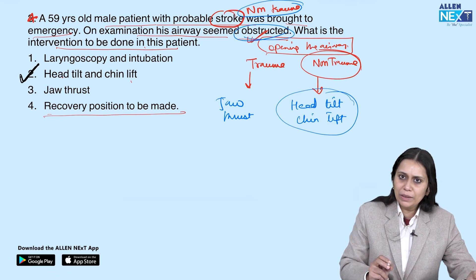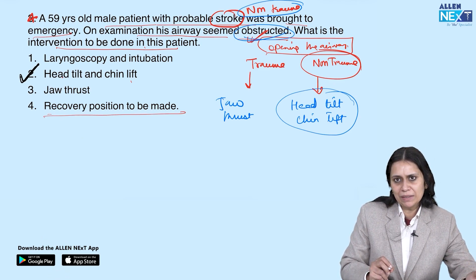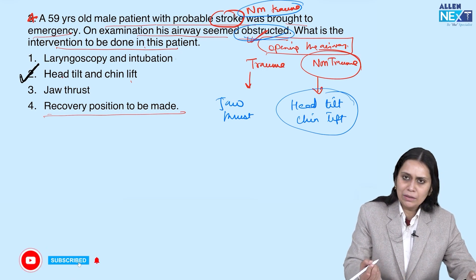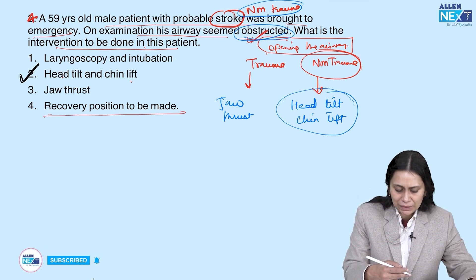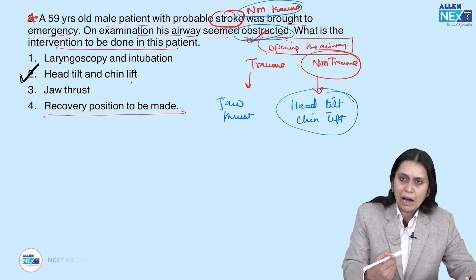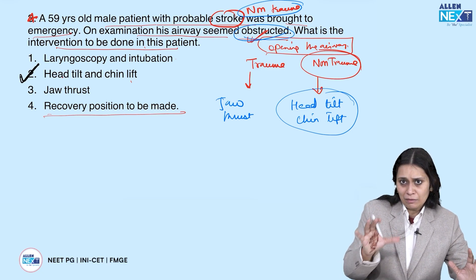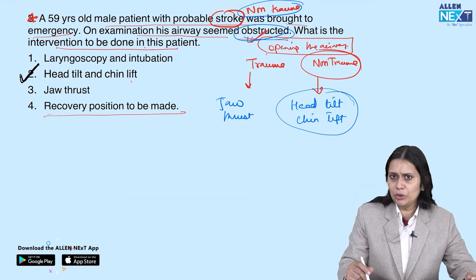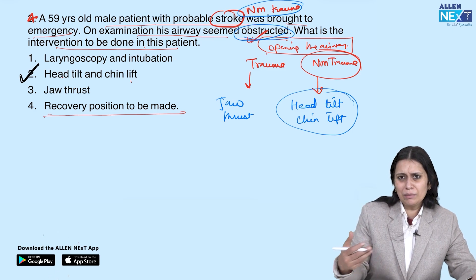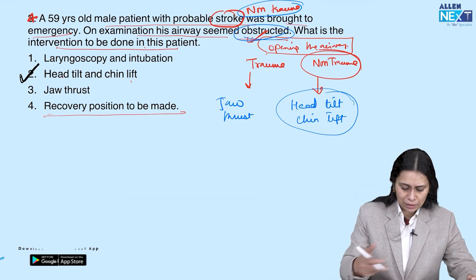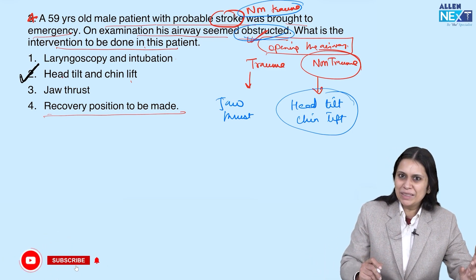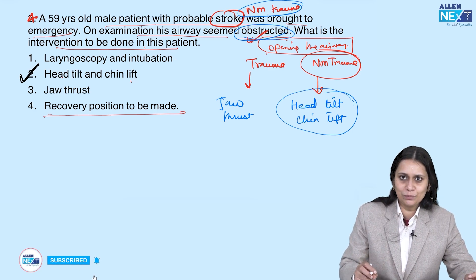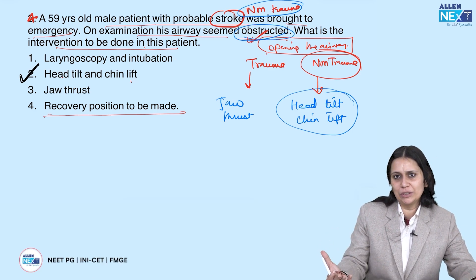Recovery position is only done in an unconscious patient with pulse and breathing present. Laryngoscopy and intubation may be needed in these patients, but only after opening the airway, once the patient has been oxygenated and there is time to perform it — it may or may not be required. The first manoeuvre is head tilt chin lift.